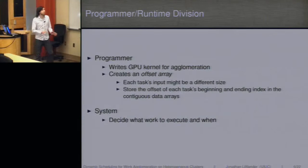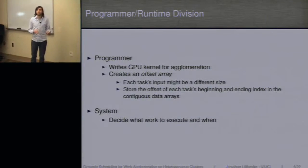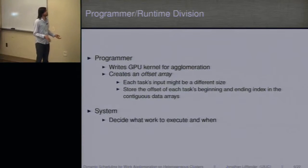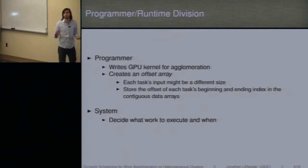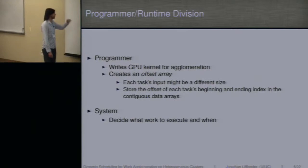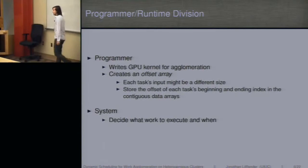For this work, we focus on the agglomeration. The programmer has a lot of responsibility. They have to write the GPU kernel that does the agglomeration. They have to create an offset array, as we call it. Basically, when all the tasks get combined, their inputs may be different lengths, so we have no idea where they start and stop. For that kernel to execute properly, they need to have the offsets for each chunk of work. So this offset array just stores the offsets for the task beginning and end to the contiguous data arrays. And the system decides what work to execute and when to execute it.